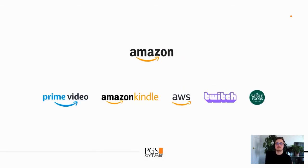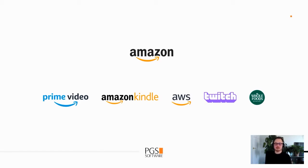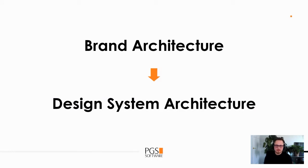The last one is the hybrid model. Here you have one main brand, some brands that inherit from the main brand guidelines and systems, as well as other brands that have their own design system. In this case, you'd probably want one extensible bigger system for the brands that inherit from it, as well as separate design systems for each brand that should not inherit from the main brand. To put it simply: brand architecture translates to your design system architecture.